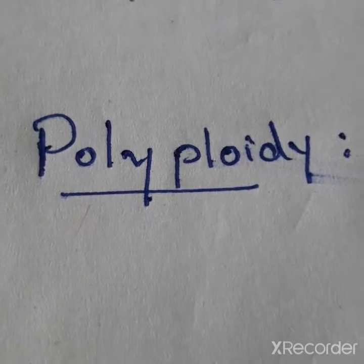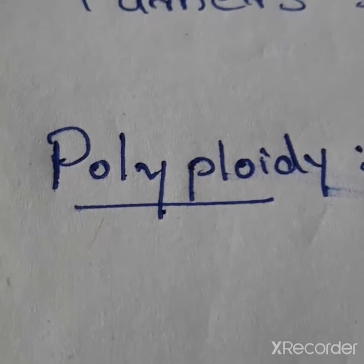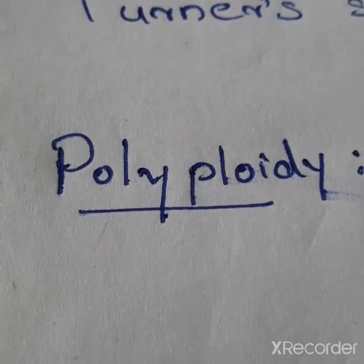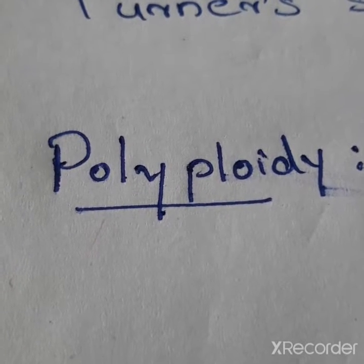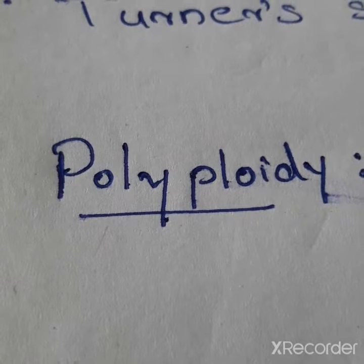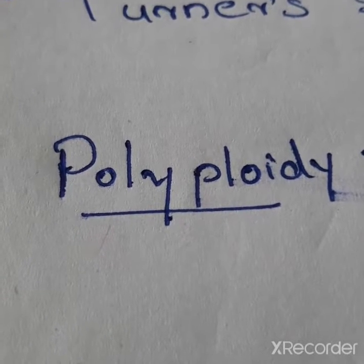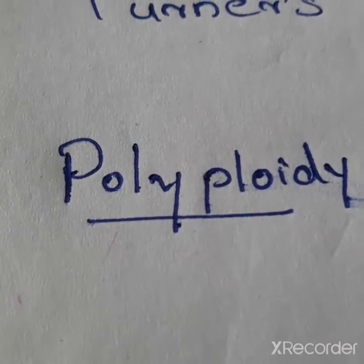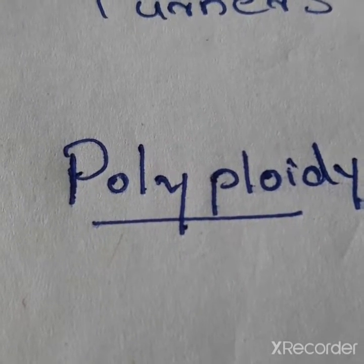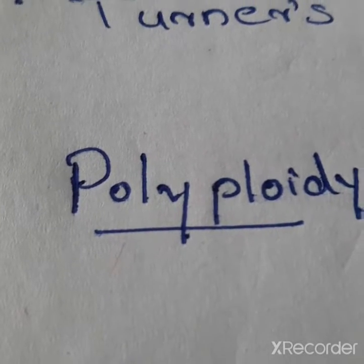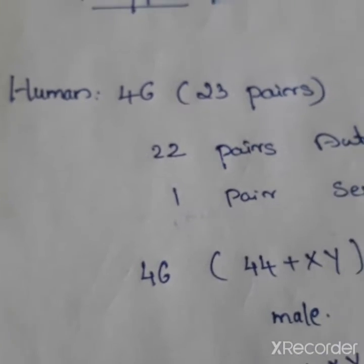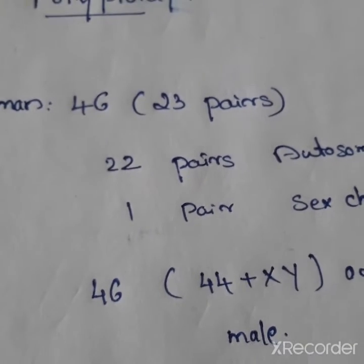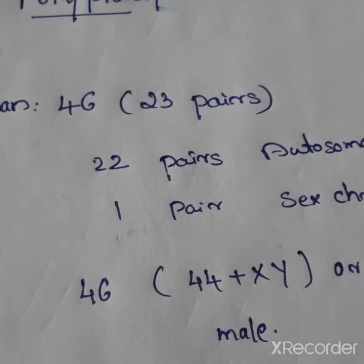Polyploidy is the failure of cytokinesis during cell division, which results in the gain of a whole set of chromosomes. This condition is called polyploidy and is mainly seen in plants. The total number of chromosomes in a normal human cell is 46, or 23 pairs.